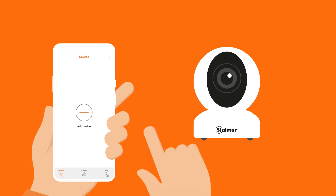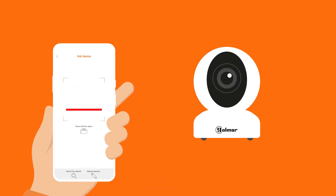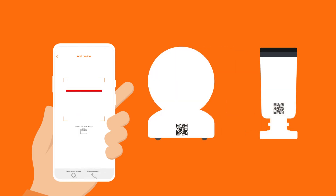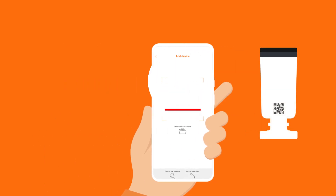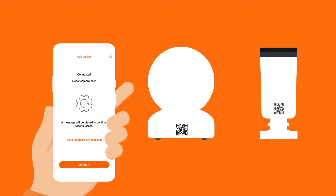Read the QR code to pair the camera by pressing the plus symbol placed at the top right corner of the screen. You will be able to find the QR code of the Mini PTZ camera at the side of the base. As for the bullet camera, it is located on the underside of the camera.